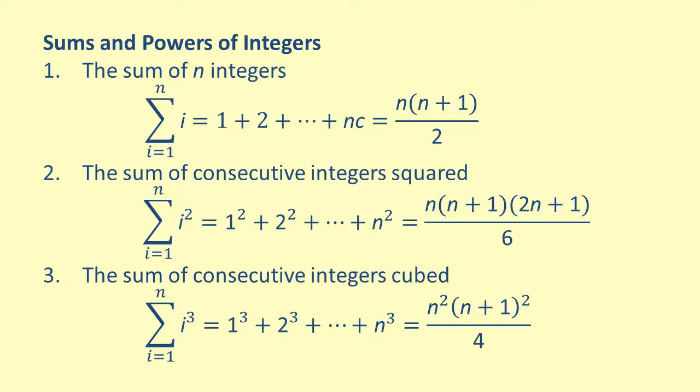Let's take a look at sums with powers of integers. First, we have the sum of n integers. We can find the sum of the first n integers using the formula n times n plus 1 all over 2.